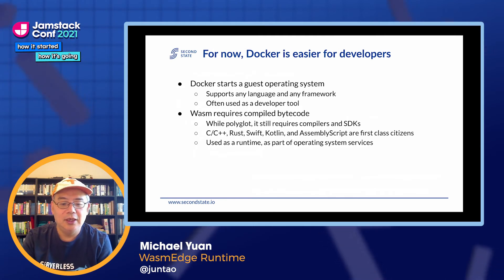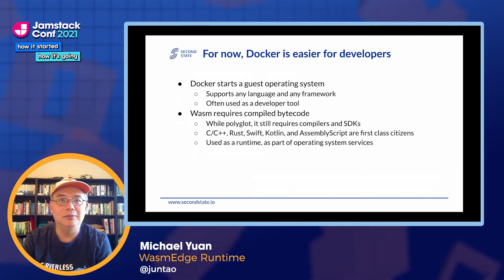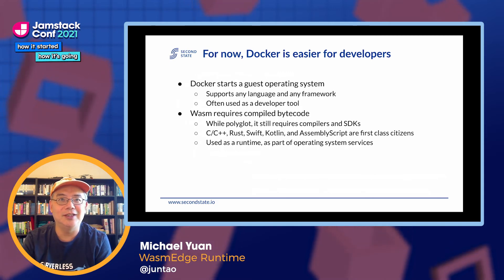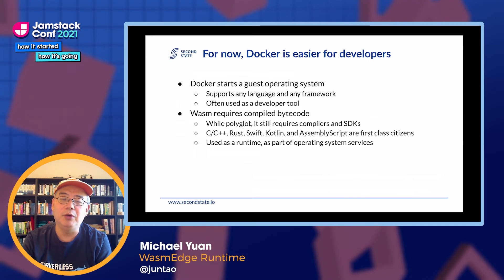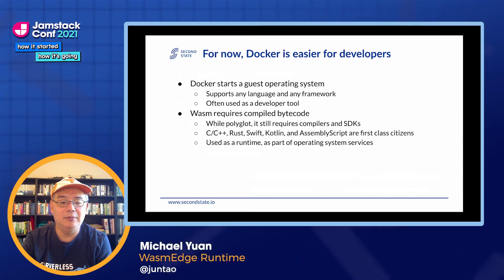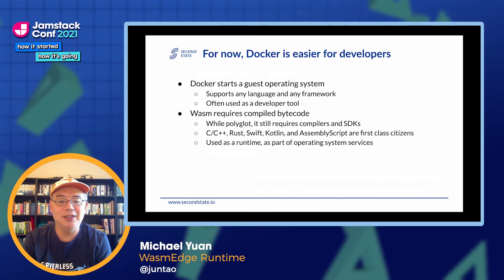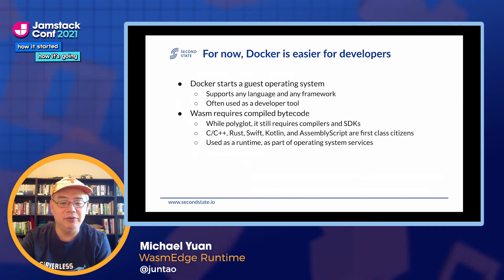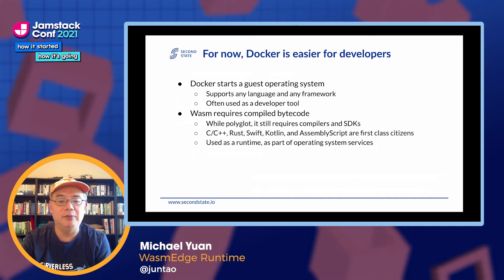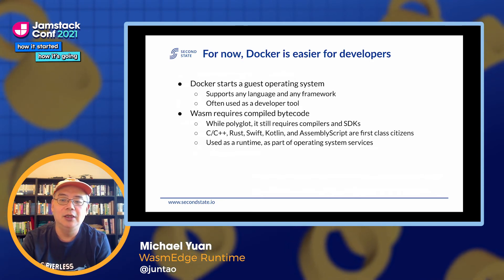However, that also creates an issue — there's no free lunch. By simulating a process, you no longer have an operating system, so you don't have all those developer necessities that Docker affords you. Docker starts an operating system — you can run whatever language frameworks you want in there. But WebAssembly requires compiled bytecode. You need a compiler and SDKs — think of it like Java, where you need the programming language, the compiler, and runtime libraries. In exchange, it gives you security, portability, and very fast performance. But the developer experience is not as good as just running Python or Node.js in Docker. So how do we solve that?